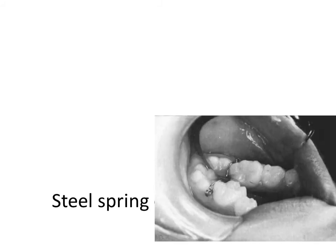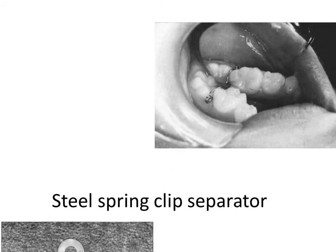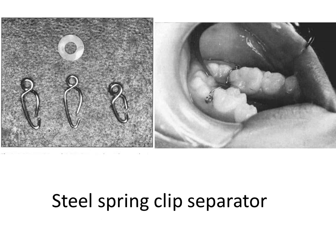The third method is the use of a steel clip separator, as we see in these clinical photographs. The clip is inserted also in the contact point to correct the position of the sixth.